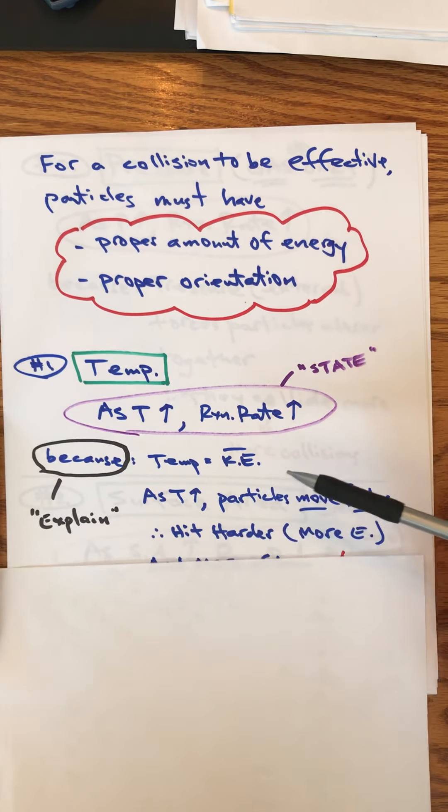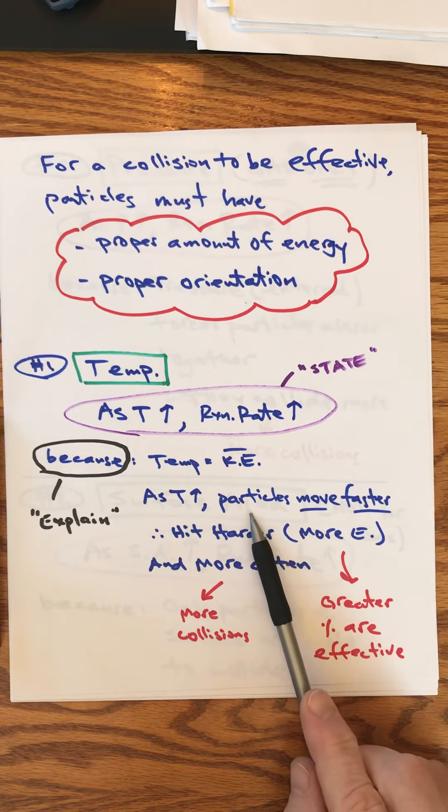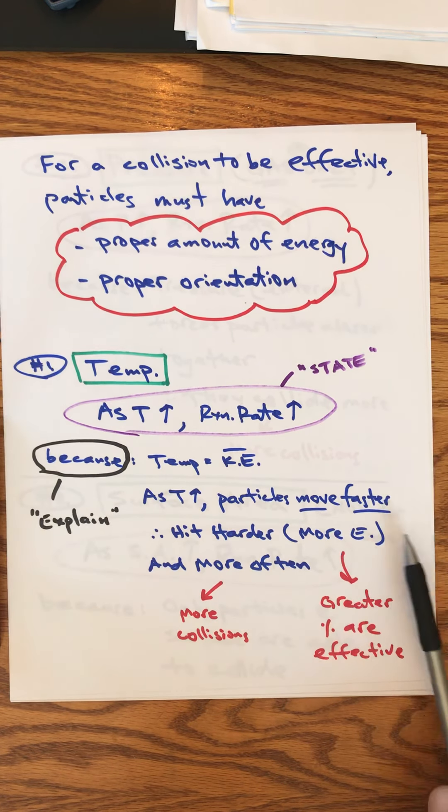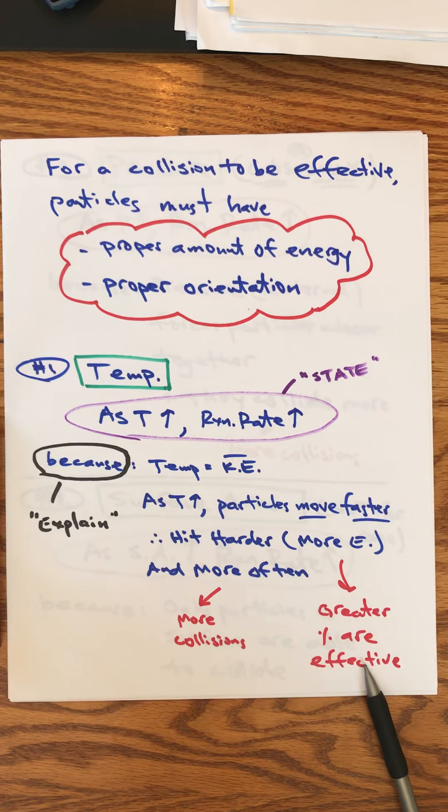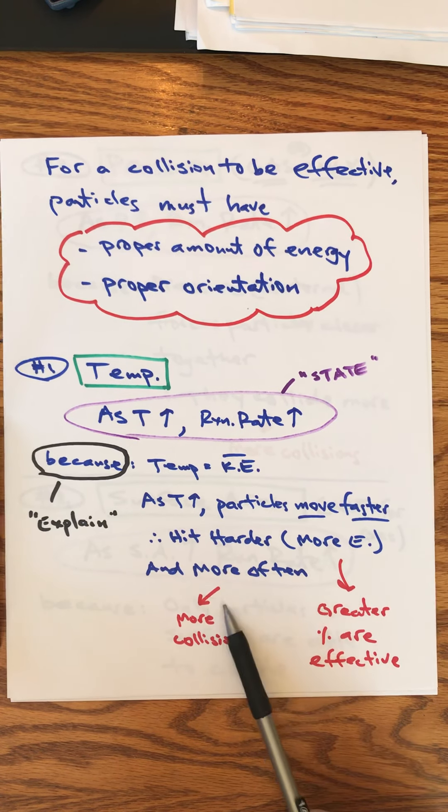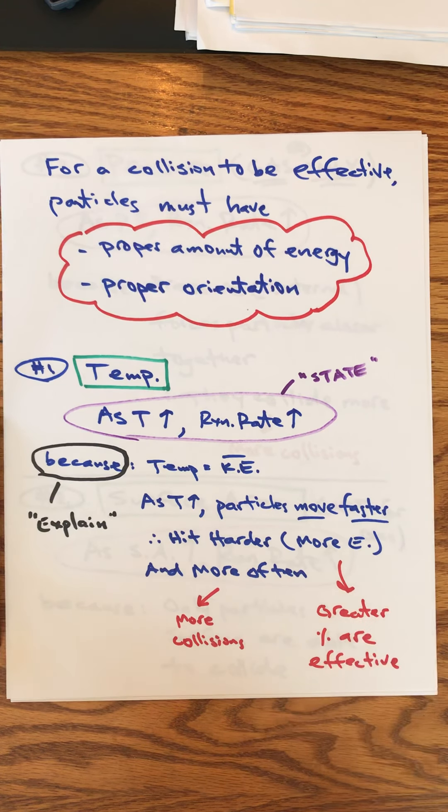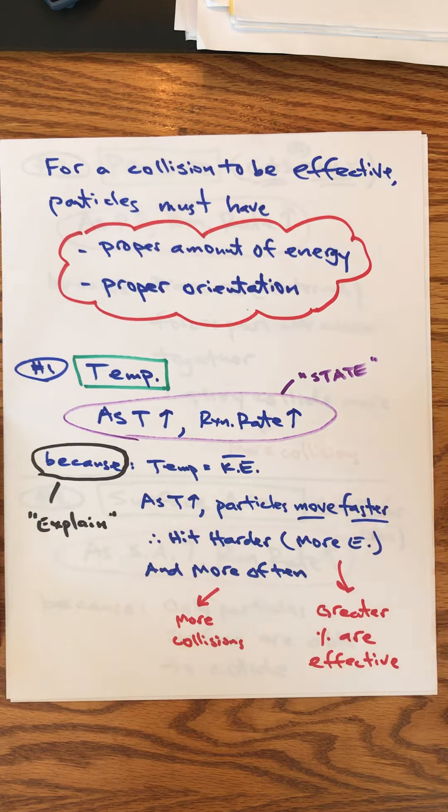Temperature is average kinetic energy. As temperature increases, particles are moving faster on average, so when they hit they hit harder. They've got more energy, they're more likely to be effective. And just by moving faster you're creating more collisions. You get more collisions and a greater percentage of them that are likely to be effective. That's a win-win scenario. If your temperature goes up, your rate of reaction goes up.